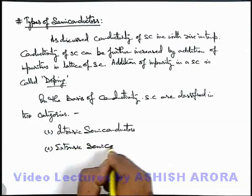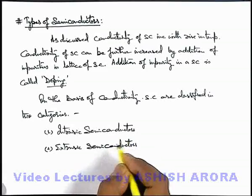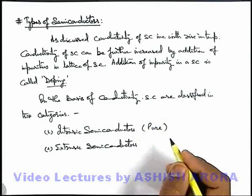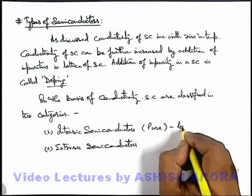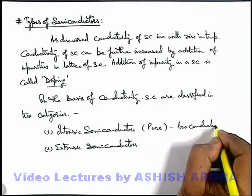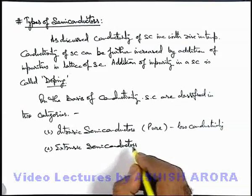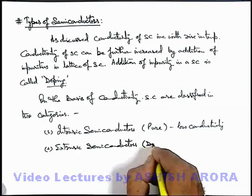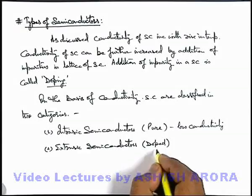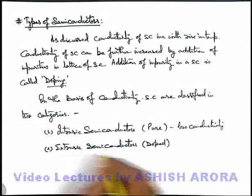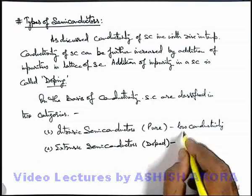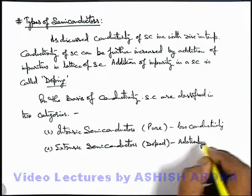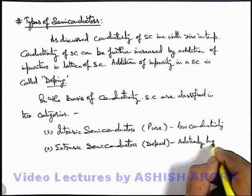Intrinsic semiconductors are those which are pure semiconductors in which there is no impurity, and these have a low value of conductivity. Extrinsic semiconductors are also called doped semiconductors — these have some impurities added in pure semiconductors and have relatively high conductivity.